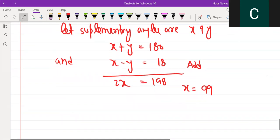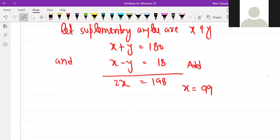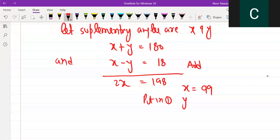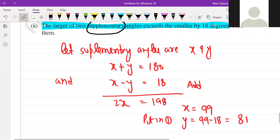If you put it in, Y equals 99 minus 18, which is 81. That's it, very good.